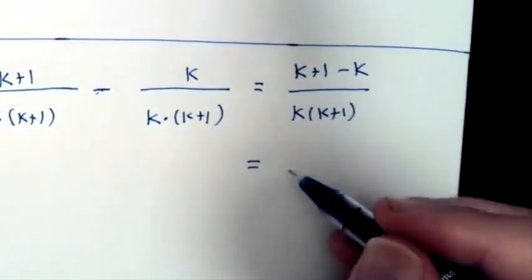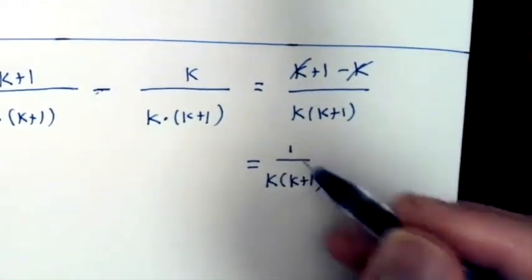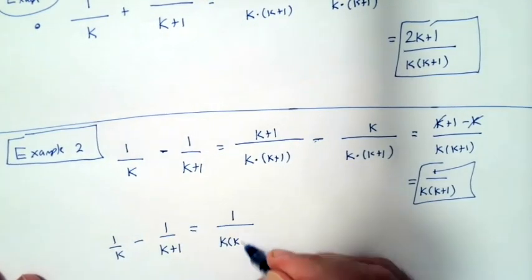When we take k plus 1 minus k in the numerator, we get 1. So our final answer is 1 over k times k plus 1.